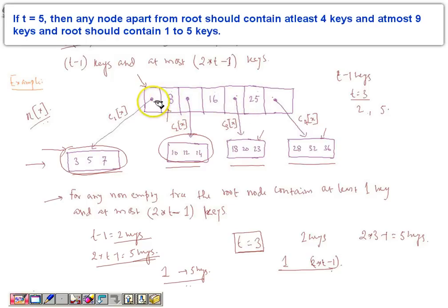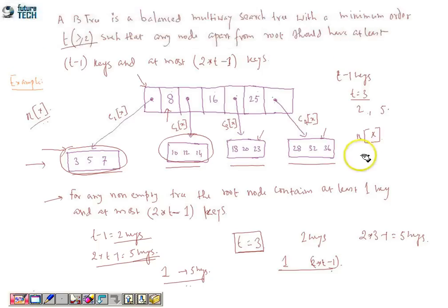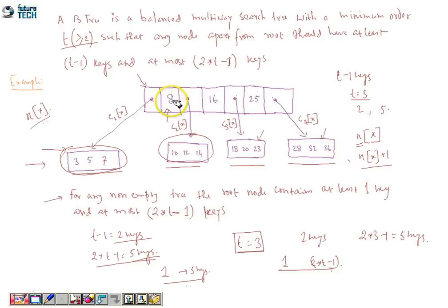For this particular node, there are three keys and four pointers: c1x, c2x, c3x, and c4x. For any node x, if there are n keys, then there are always n plus one pointers in that node. If a pointer doesn't point to a subtree, it is null or undefined; otherwise it holds the address of the subtree. So for any node with n keys, there are n plus one subtrees.